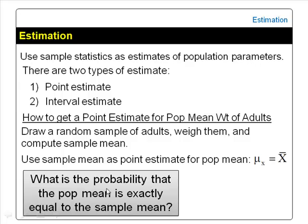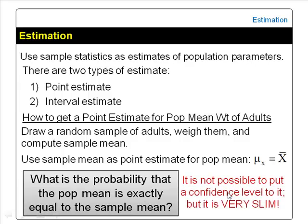What is the probability that the population mean weight of adults is exactly equal to the sample mean? It is not possible to put a probability or confidence level to it — it is very slim.